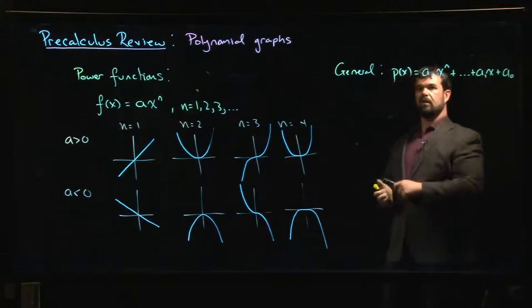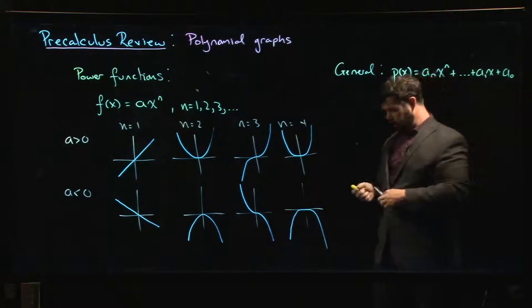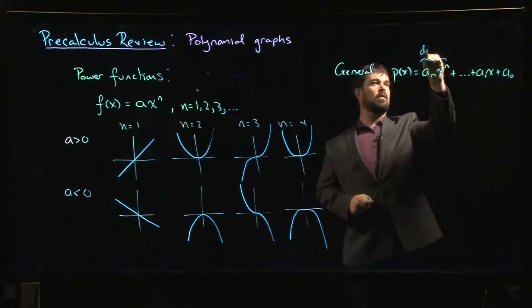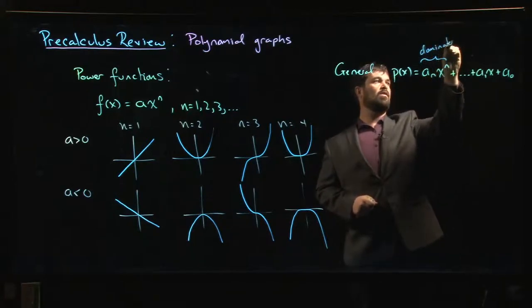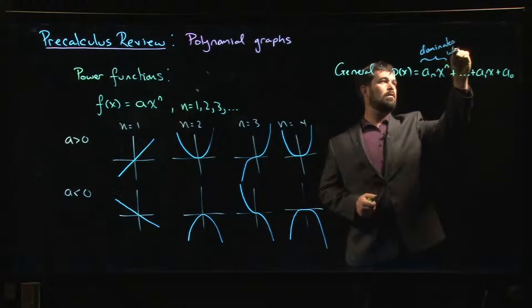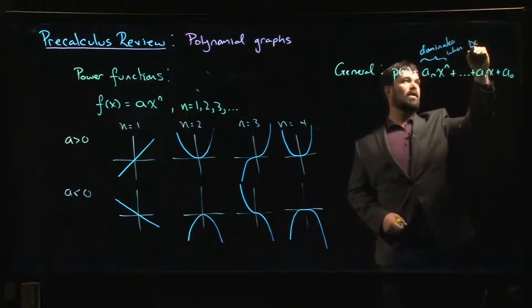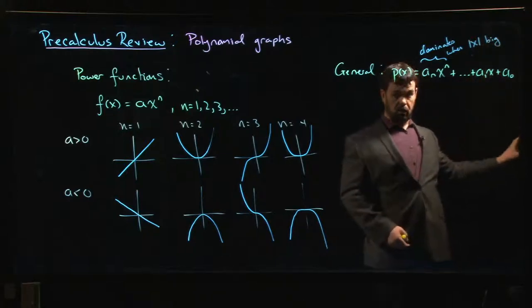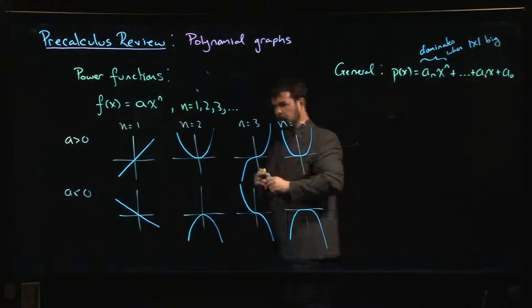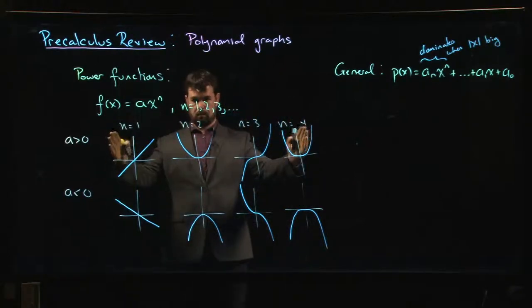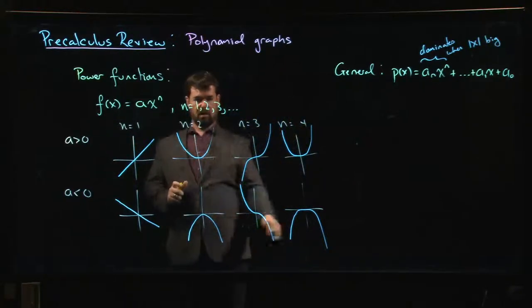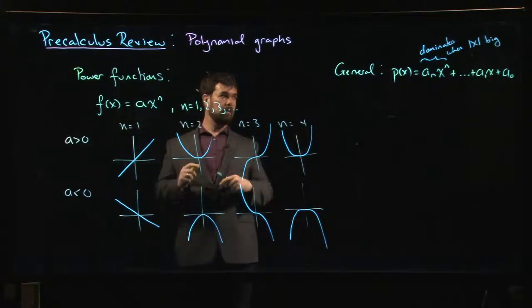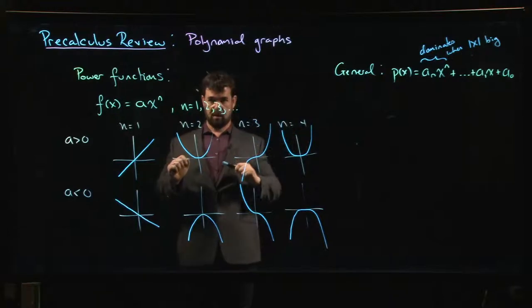Now that leading term, that's the dominant term. So this is going to be the most important term when the absolute value of x is big. When they're large and positive or large and negative, as you head out, your polynomial is going to look a lot like one of these. So the end behavior, if you like, what happens eventually is determined by that leading term.